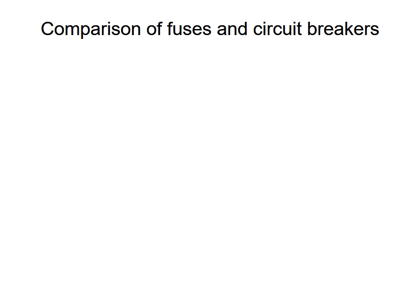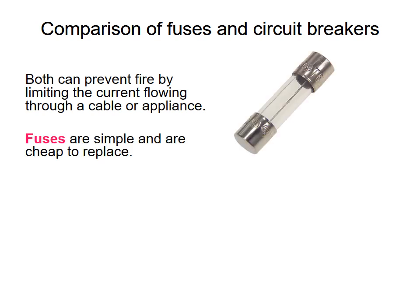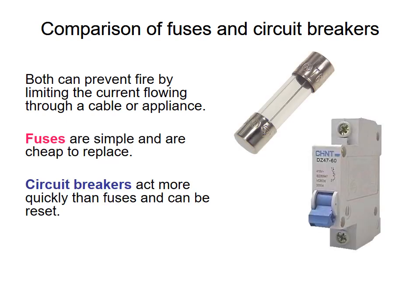Comparing fuses and circuit breakers: both can prevent fire by reducing the current flowing through an appliance. Fuses are simple and cheap to replace, whereas circuit breakers act more quickly than fuses and can be reset.